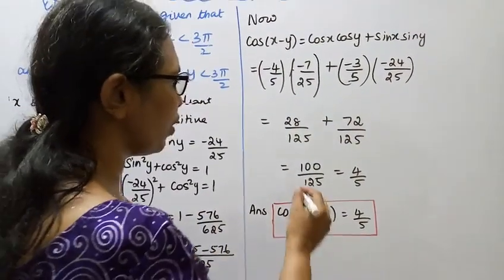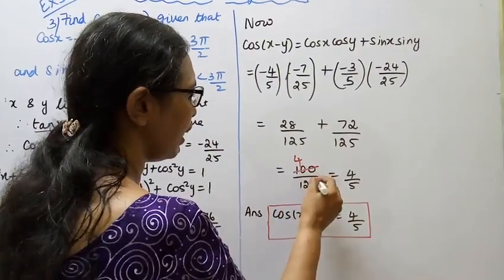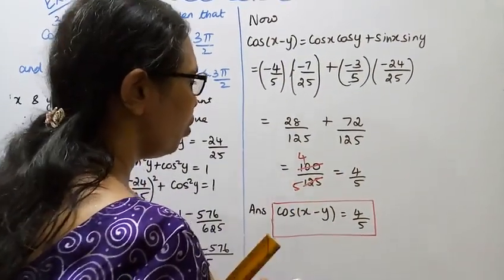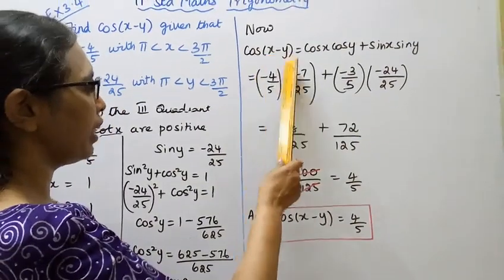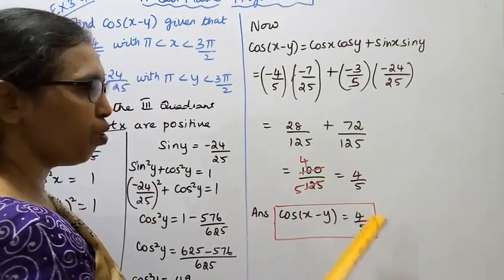100 by 125 can be simplified: 25 cancels to give 4 by 5. Therefore the answer is cos(x - y) equals 4 by 5.